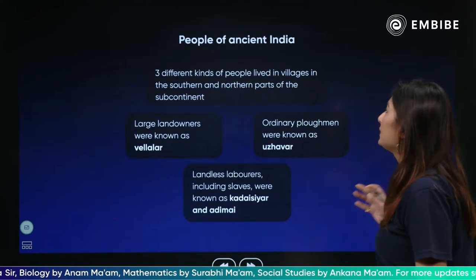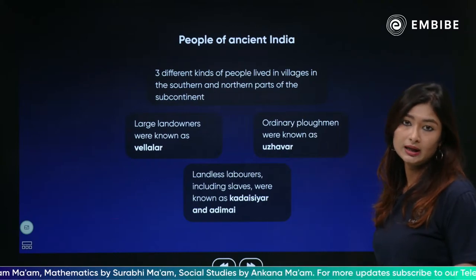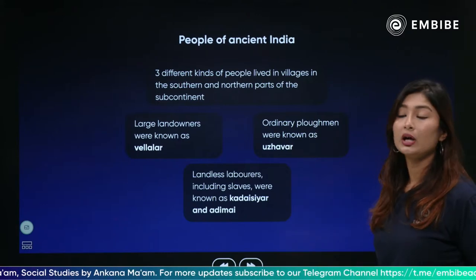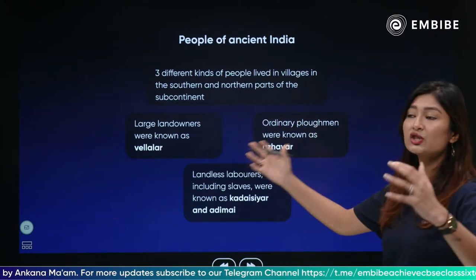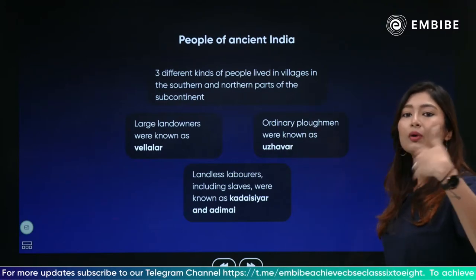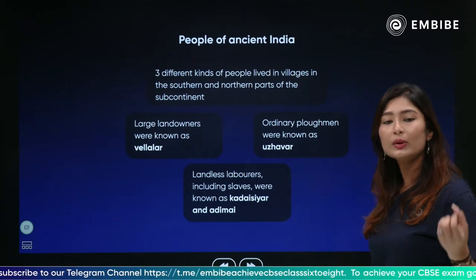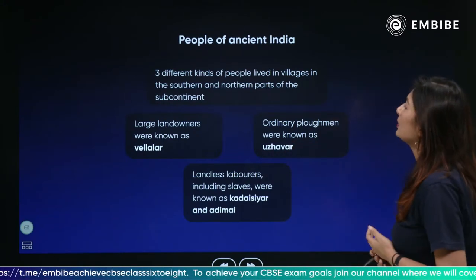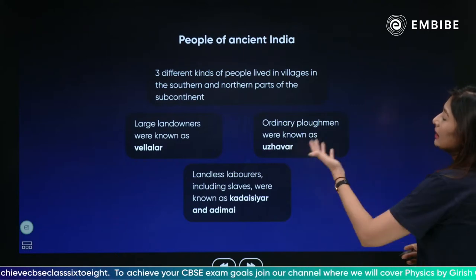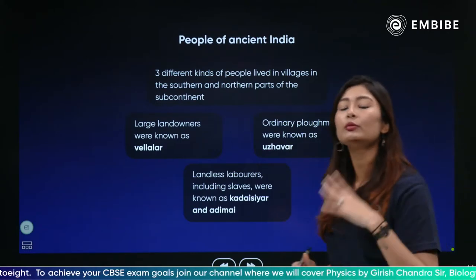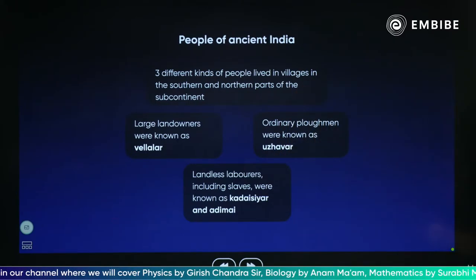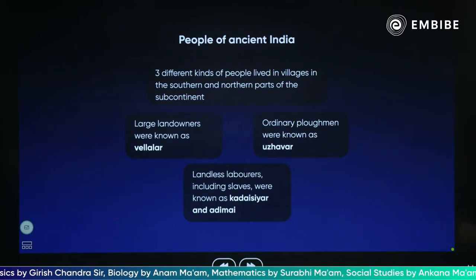There are three different kinds of people who lived in ancient India. If you understand that iron was being discovered, new tools were being invented, it led to more production and played a crucial role in establishing kingdoms. When talking about people who lived at this point, there are three different kinds who lived in villages in the southern and northern parts of the subcontinent. What do you mean by subcontinent? It means smaller than a continent.